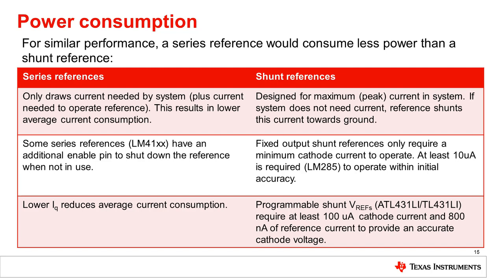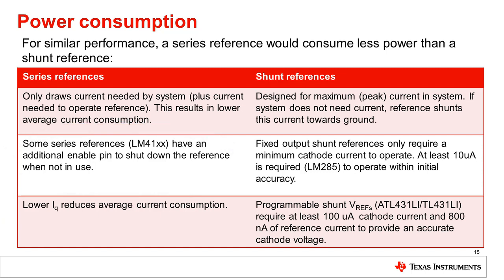Additionally, some series voltage references, such as TI's LM41XX family, have an enable pin that shuts the reference down when it is not being used. While in shutdown mode, the reference draws almost no current. Nevertheless, there are many applications where shunt references can also have very low power consumption, because they operate with very low minimum current and can be adjusted depending on the design. So if the load current requirements are low, a shunt reference can often be configured for low power.